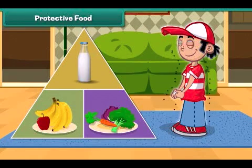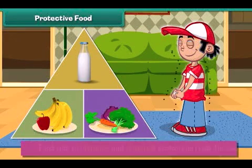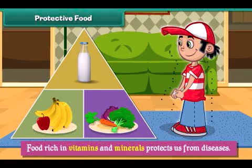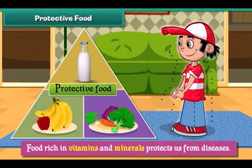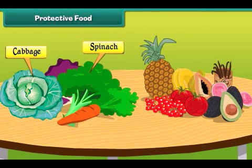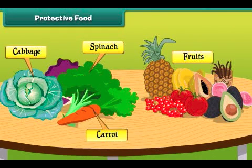Food rich in vitamins and minerals protects us from diseases. Therefore it is called protective food. Green leafy vegetables such as spinach and cabbage, carrots and fruits have lots of vitamins and minerals.